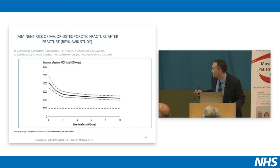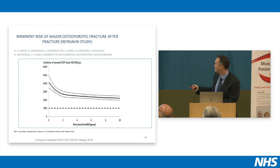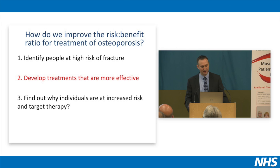Before finishing on fracture risk, I wanted to show work from Professor Harvey in Southampton, which shows what proportion of people are having fractures relative to the time after their first fracture. Directly after the first fracture, you're at much higher risk of having a second fracture. We need to be targeting people who have had a fracture quickly, because the increased risk is particularly high at that point — but the increased risk is maintained out to at least 10 years.